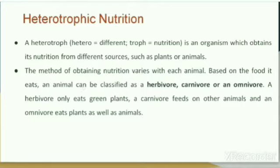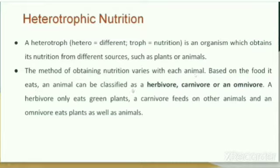A heterotroph — 'hetero' means different, 'troph' means nutrition — is an organism which obtains its nutrition from different sources such as plants or animals. The method of obtaining nutrition varies with each animal. Based on the food it eats, an animal can be classified as herbivore, carnivore, or omnivore.